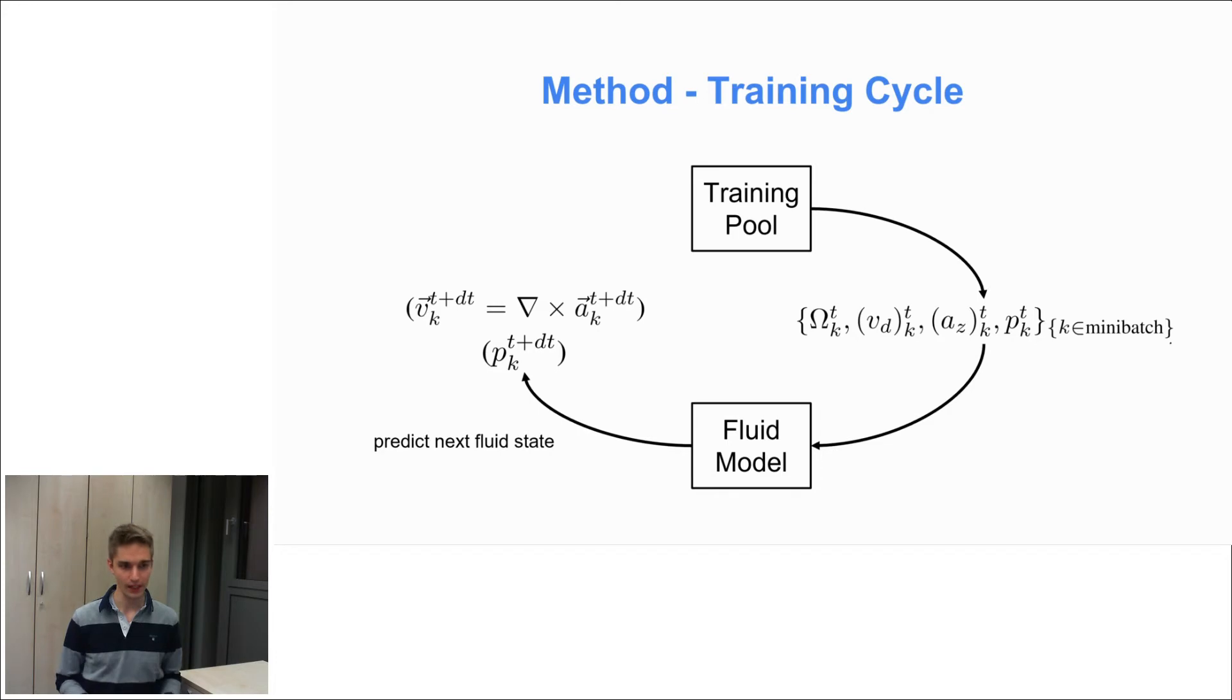Then we draw a random mini-batch from that training pool, feed it into our fluid model and predict the next fluid state. This is then used to compute a physics-constrained loss. And then we update the weights of our fluid model with respect to that loss. And finally we can update the training pool with the just predicted fluid state. And this way in every cycle we not only optimize our fluid model, but we also fill up our training pool with more and more realistic fluid states.